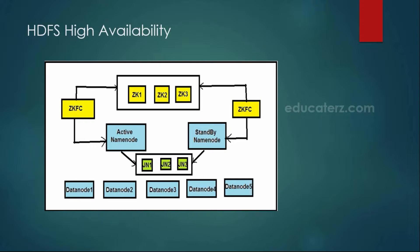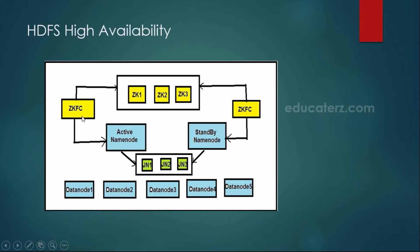Apart from that, we also have another important daemon called zkfc — that is the zookeeper failover controller. This zkfc daemon will be available in the active name node and also installed in your standby name node as well. The purpose of this zookeeper failover controller is that it keeps monitoring the name node service and the name node hostname, and it keeps sending updates to your zookeepers. It simply monitors and sends updates to your zookeepers. Your zookeeper will take care of the coordination decision, like which is the leader — leader elections and such things are taken care of by your zookeepers.